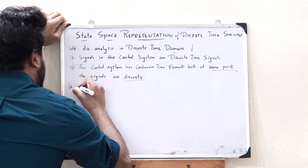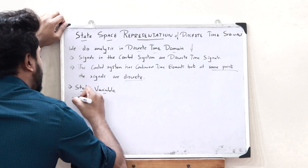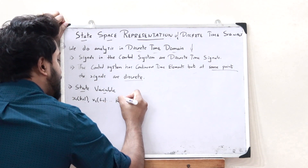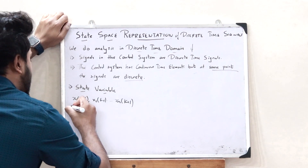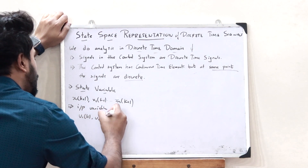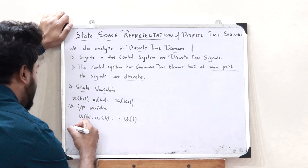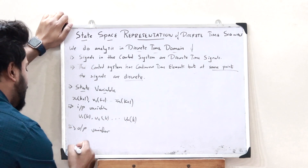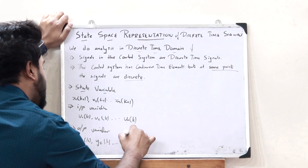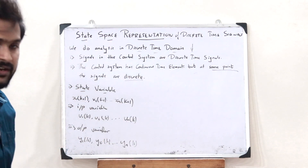The first variable is the state variable, represented as x1(k+1), x2(k+1), and so on up to xn(k+1). Similarly, we have the input variables given as u1(k), u2(k), and so on up to un(k). These are the variables used for the purpose of state space representation of discrete time signals.